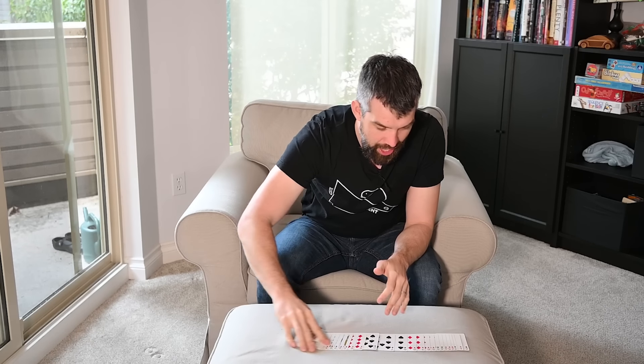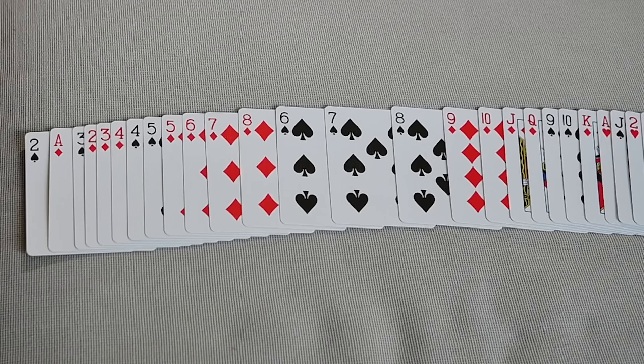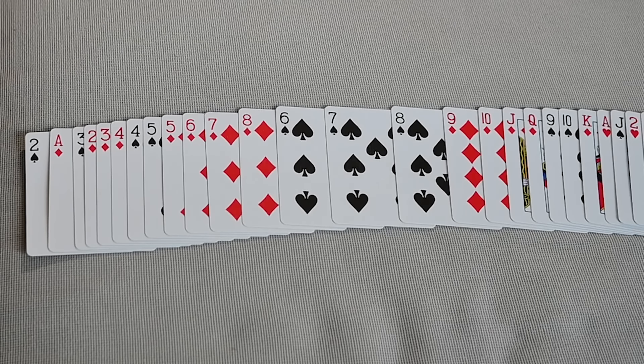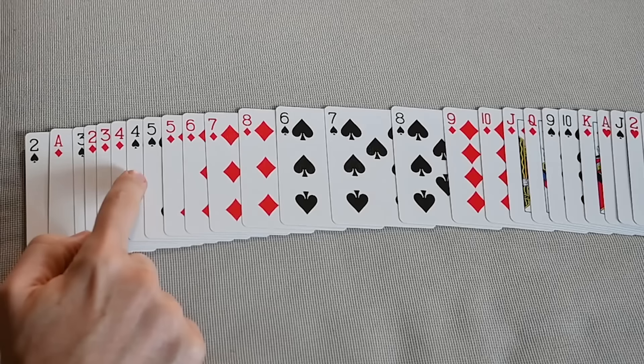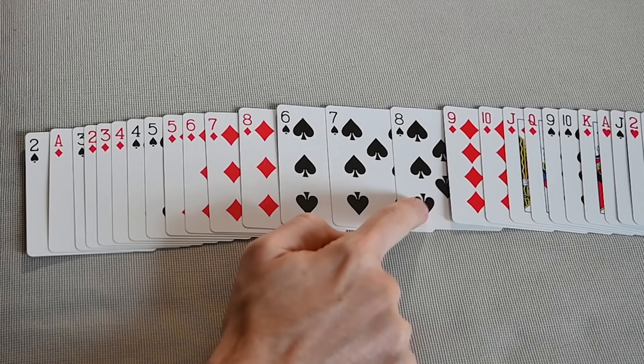Now with this deck, which has only been shuffled once, let's take a look at what it looks like. What I notice is that I have two different ascending sequences. In spades, there's a 2, 3, 4, 5, 6, 7, 8 of spades.